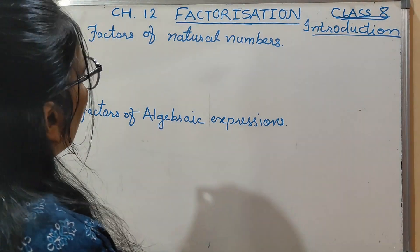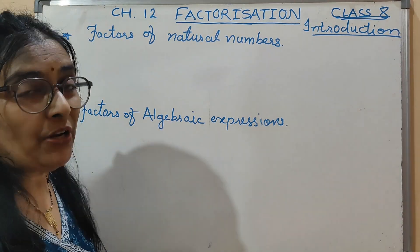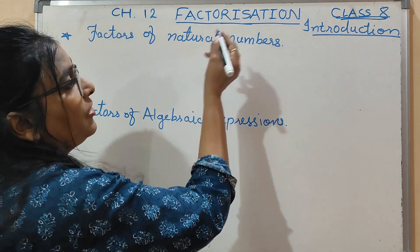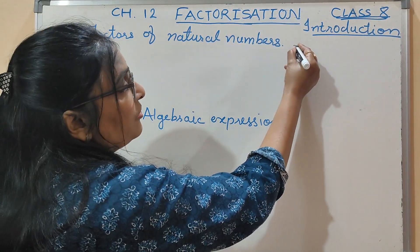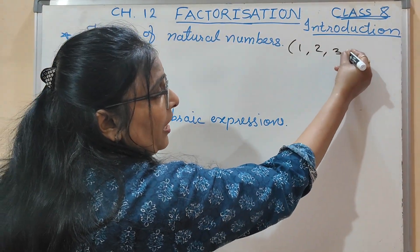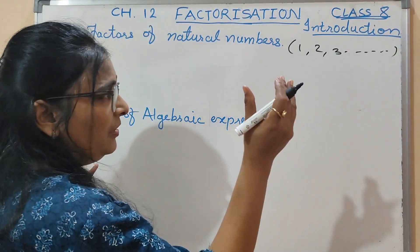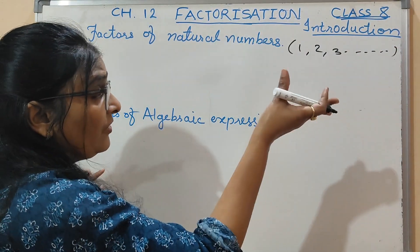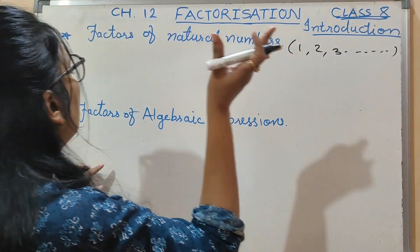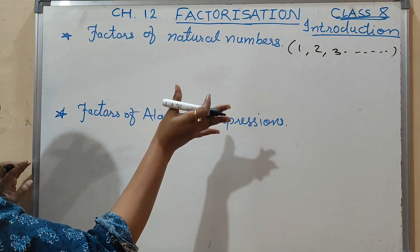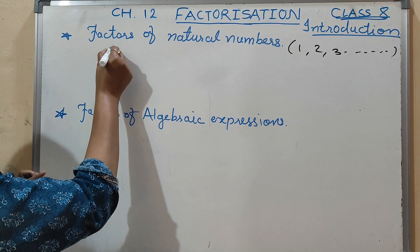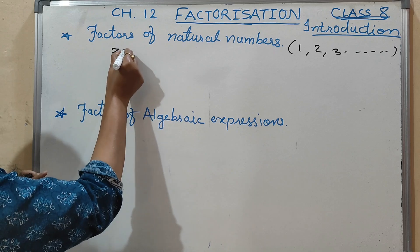First of all, we will see the factors of natural numbers. You will know what natural numbers are — natural numbers start from 1, 2, 3 and so on. So how do we find the factors of natural numbers? Suppose I am taking here the natural number 30.